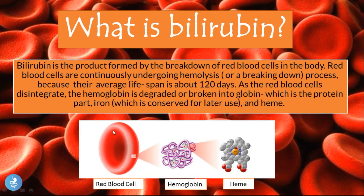As you can see, our red blood cell undergoes hemolysis and when it's broken down we are left with all the components that make it up. We have the globin part, which is basically the protein part, the iron which is saved to be reused, and then we have the heme part.